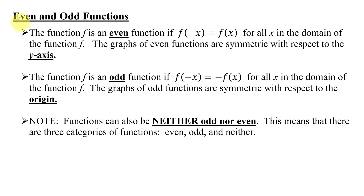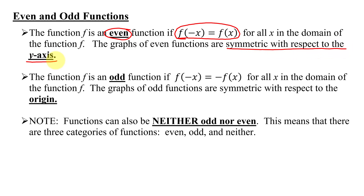In this video, I'm going to look at even and odd functions. The function f is an even function if f of negative x equals f of x for all x in the domain of the function f. The graphs of even functions are symmetric with respect to the y-axis. This means if I replace every x in f with negative x, I get the original function back out.